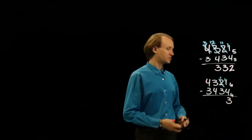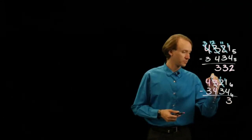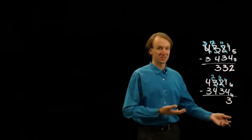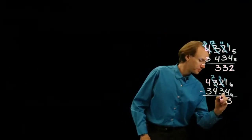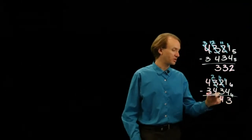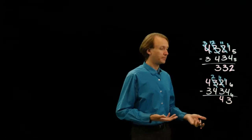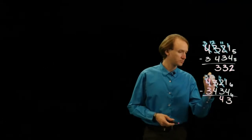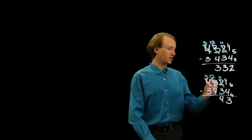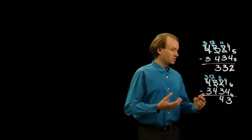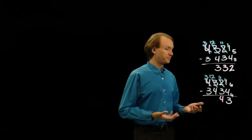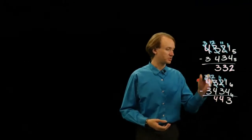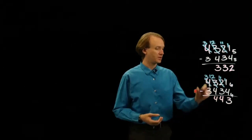Then 3 is less than 1, so I'll need to borrow something. Now I have 11 minus 3, well that's the same as 7 minus 3, which is 4. Or I could say 10 minus 3 leaves me with 3, and 3 plus 1 is 4 as well. And then 2 is less than 4, so I'll borrow something from over here. Now I've got 12 minus 4. This would be 8 in decimal, and 8 minus 4 is 4. Or 4 plus 2 gives me 10, plus 2 more gives me 12. And then 3 minus 3 is 0.